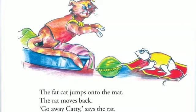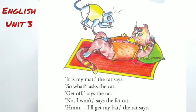Will the cat catch the rat? Let's see. Now look at the next picture. The cat is lying on the rat's mat. So let's see: 'It is my mat,' says the rat. 'So what?' says the cat. 'Get off!' says the rat. 'No, I won't,' says the fat cat.